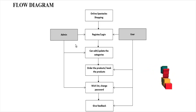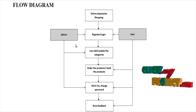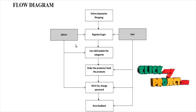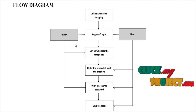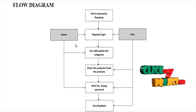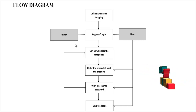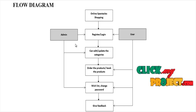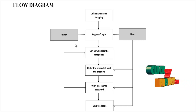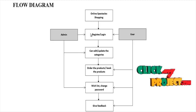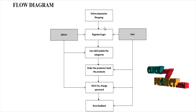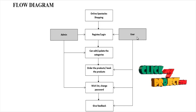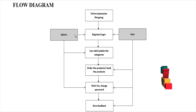The user can order the products and finally add to cart, then book the products. The user can also change their password and also has a wishlist. The user gives some feedback about the products and can also make queries about the products. After finishing, the user can log out and the admin can also log out.